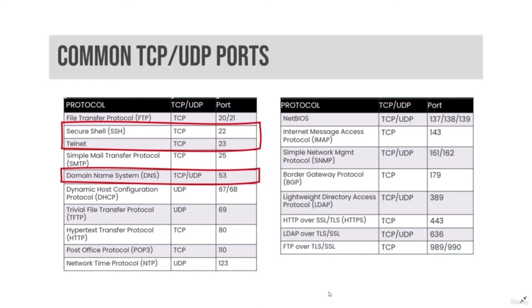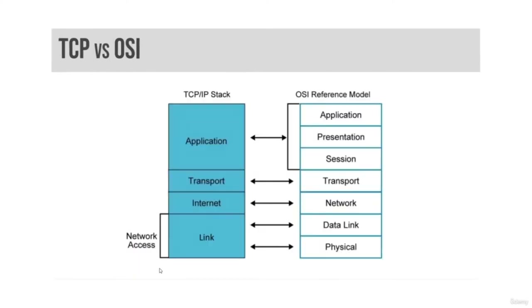DNS uses both TCP and UDP. Small responses use UDP port 53, while large responses, including zone transfers, use TCP port 53.